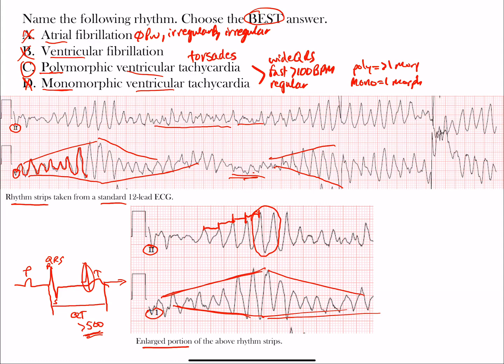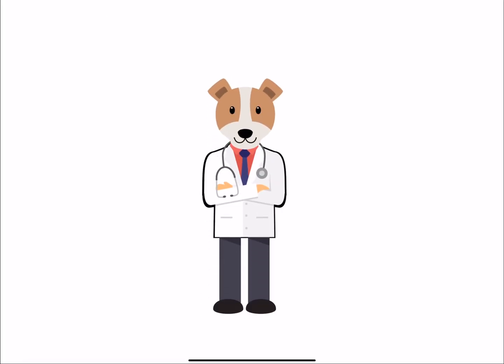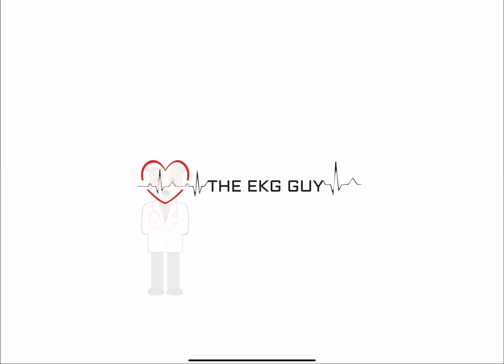To recap: atrial fibrillation is not correct — we have no P waves and no normal conduction down through the ventricles. This is a form of V-tach, not ventricular fibrillation, although some areas may look like V-fib. Choosing the best answer, it's V-tach — not monomorphic because it has more than one morphology. Our best choice is polymorphic ventricular tachycardia, or torsades de pointes. That's the end of this lecture; I hope you learned something and enjoyed it.